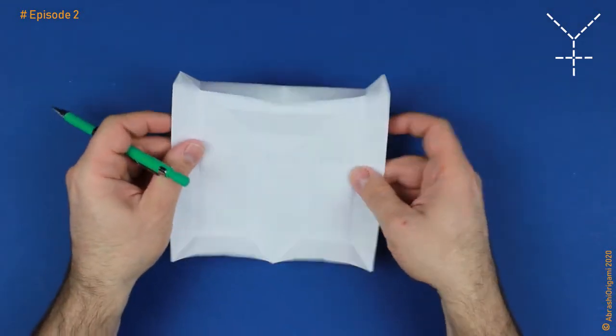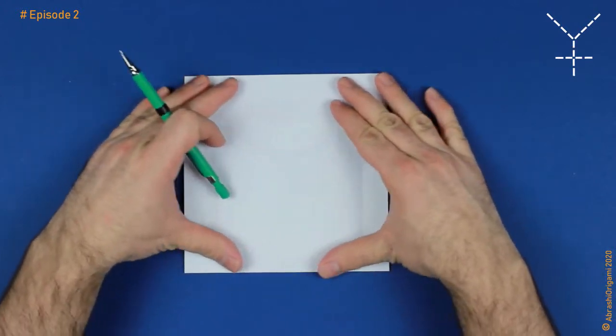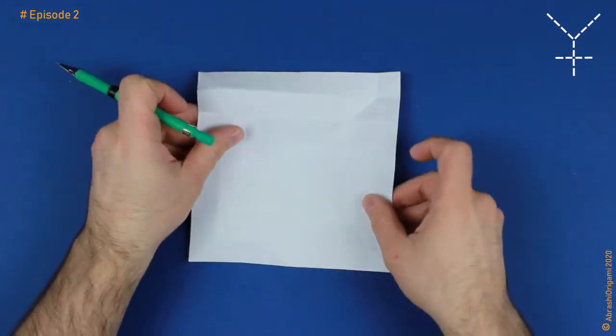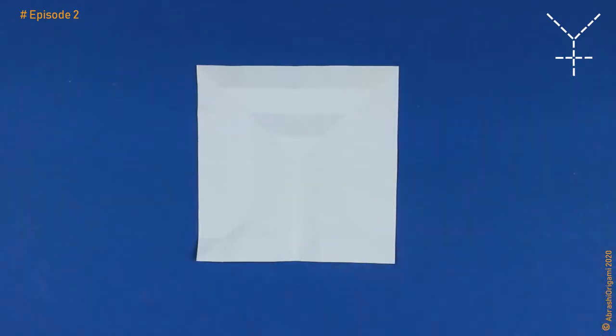Let's first unfold the base in order to see the creases, to see the crease pattern. To make it easier, let's pause the footage and enhance the visibility of the creases, just to make them more visible on white paper. Ok, this is much better.